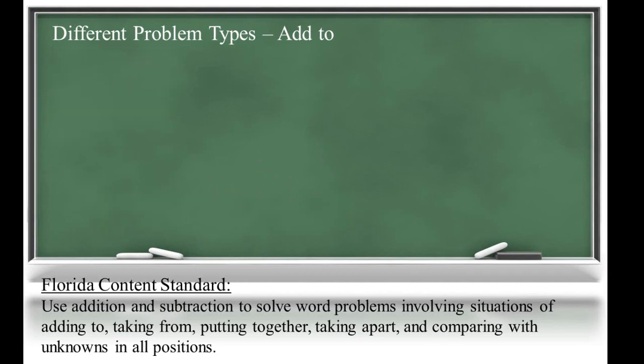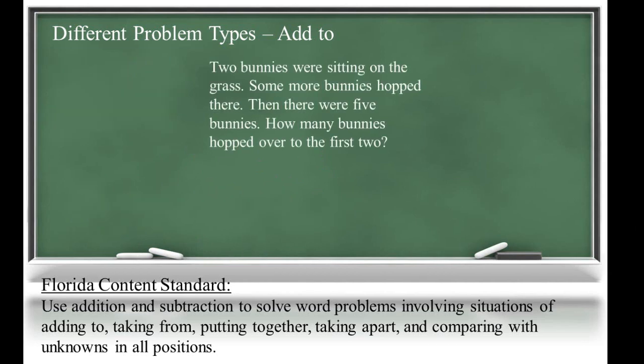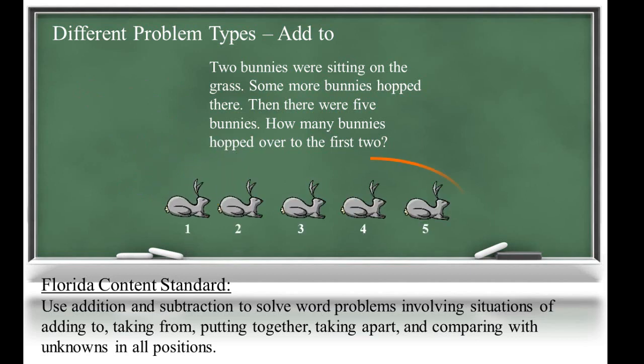In the next add-to problem, two bunnies were sitting on the grass. Some more bunnies hopped there. Then there were five bunnies. How many bunnies hopped over to the first two? In this problem, we know the amount we started with, but we do not know how many more came, which is the change. Students will be able to count from two bunnies up to five to determine the change.